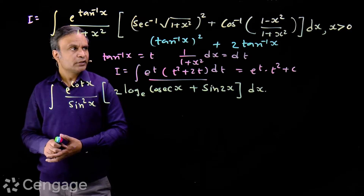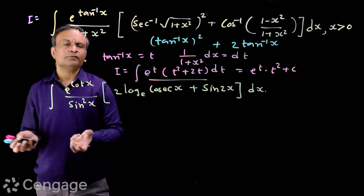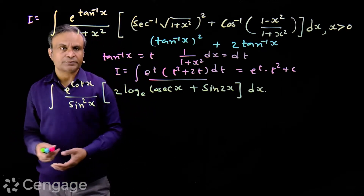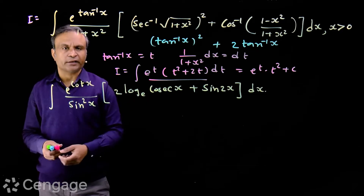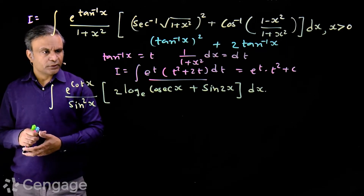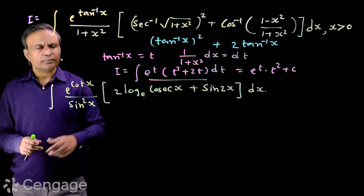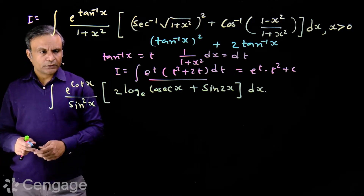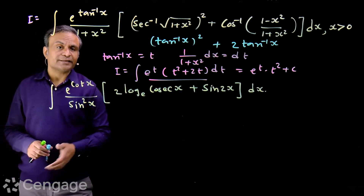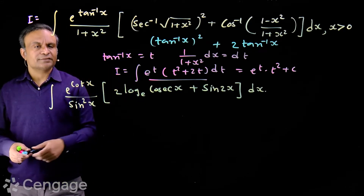This is a very nice question. We used concepts and elementary formulas of inverse trigonometric functions which helped us identify the substitution tan⁻¹x = t. Now, for the next integral: we have ∫e^(cot x)/sin²x × [2log(cos x) + sin 2x] dx. One thing should immediately come to mind: 1/sin²x is cosec²x, and cosec²x is the derivative of −cot x. So the substitution will be cot x = t.